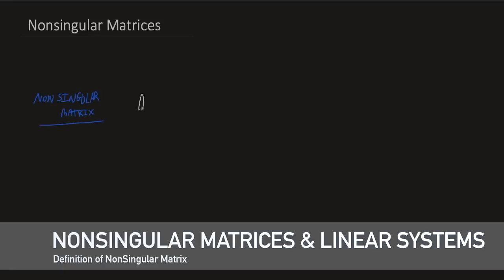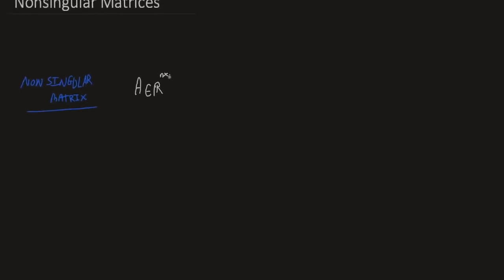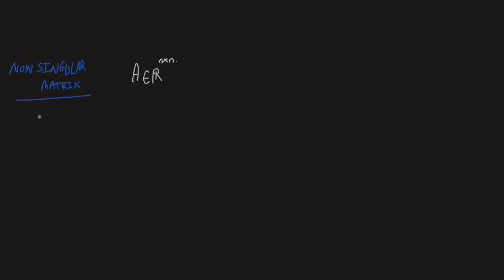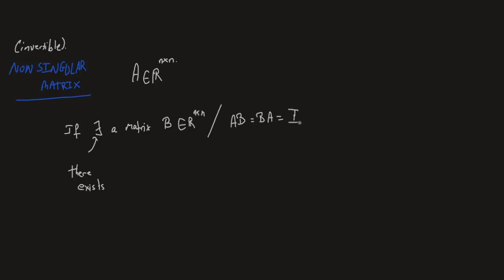Given a square matrix A of size N, we say that A is non-singular, or also invertible, if there exists a matrix B of the same size such that AB equals BA equals the identity matrix I. If you can find such a B that commutes with A and gives I, then A is non-singular. Otherwise, if there is no such matrix, then A is singular or non-invertible.